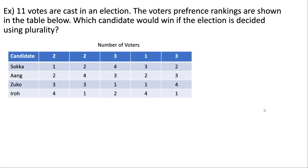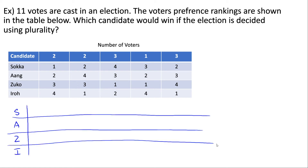Let's look at one more example. I'd recommend pausing the video and trying to work out the problem yourself, then hitting play to see the solution. Here we have four candidates and several columns indicating groups of voters. We're told there are 11 voters in this election, so at the end we want to make sure all our tallies add up to 11.